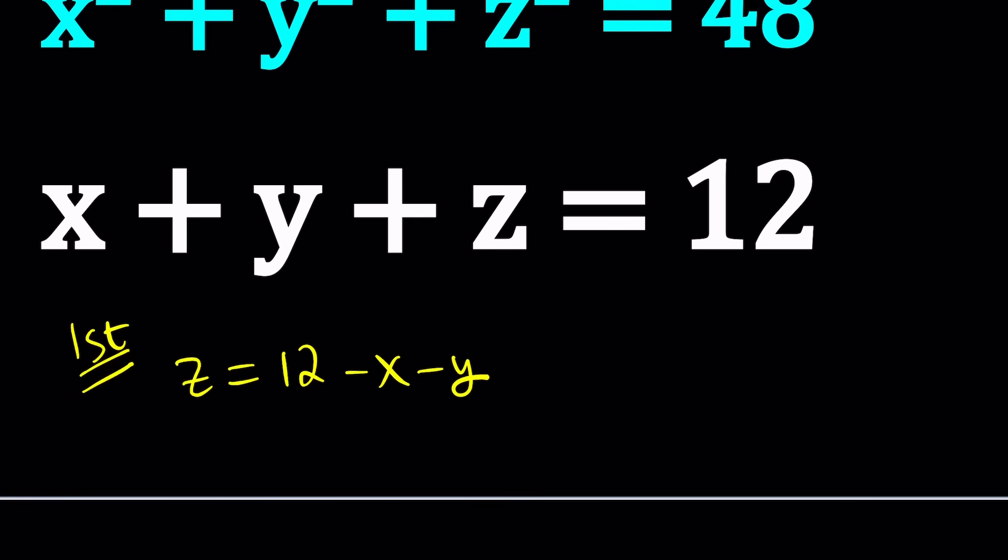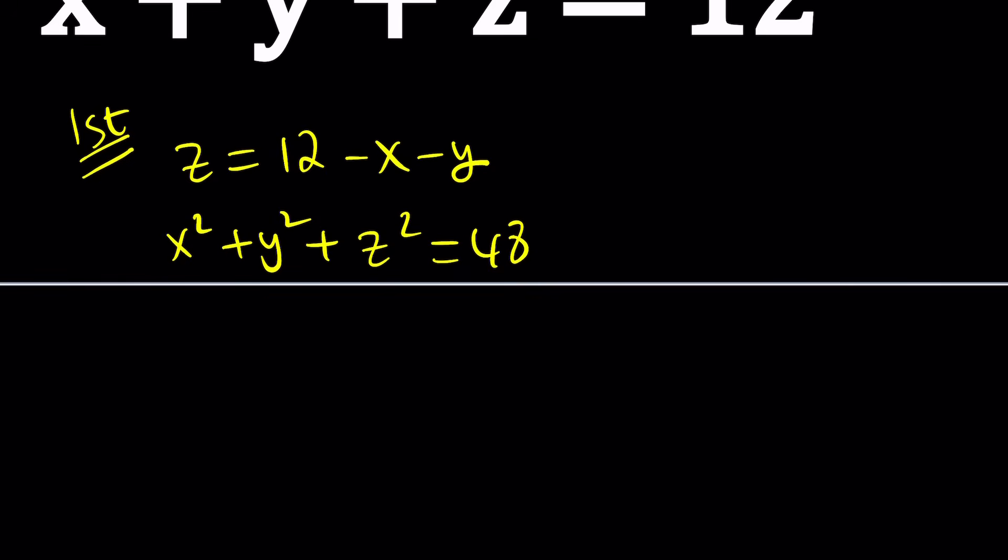And then that's something I can substitute into the first equation. So now z is by itself. I can replace z with what it is. Let's do that. x squared plus y squared plus z squared, which is 12 minus x minus y quantity squared. And the whole thing is equal to 48. Now, is this going to help? We don't know. We're going to find out. So you just got to give it a try. Sometimes you don't know the solution method, and you just discover along the way.